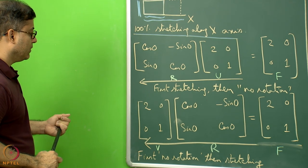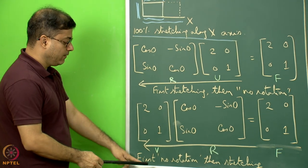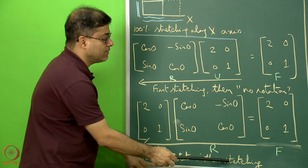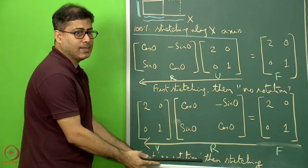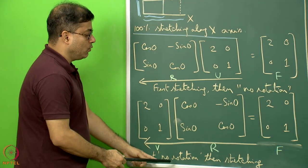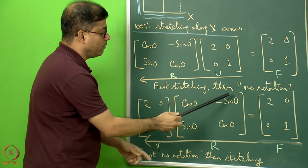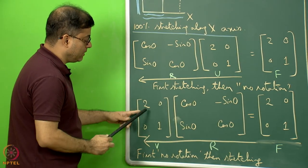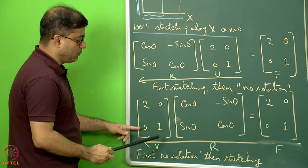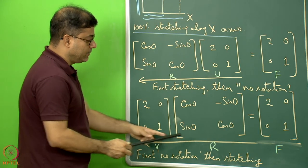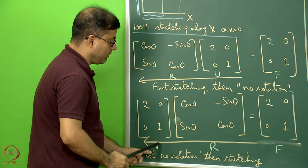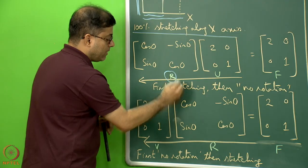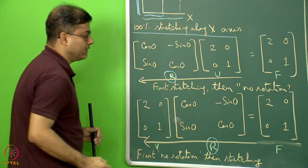If we think of it as first no rotation then stretching, it is effectively the same: only stretching, no rotation. So R is cos0, sin0; -sin0, cos0, and U is [2,0;0,1]. V·R multiplied also gives the same F. Note that R is the same matrix in both cases.